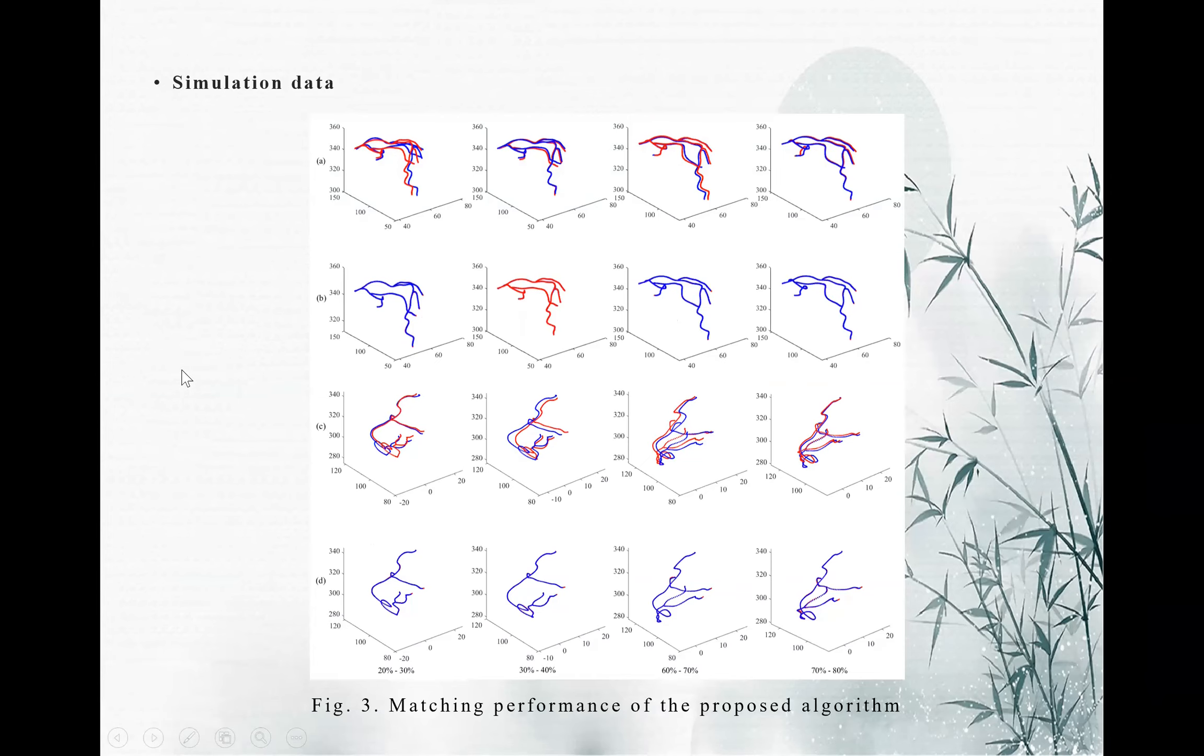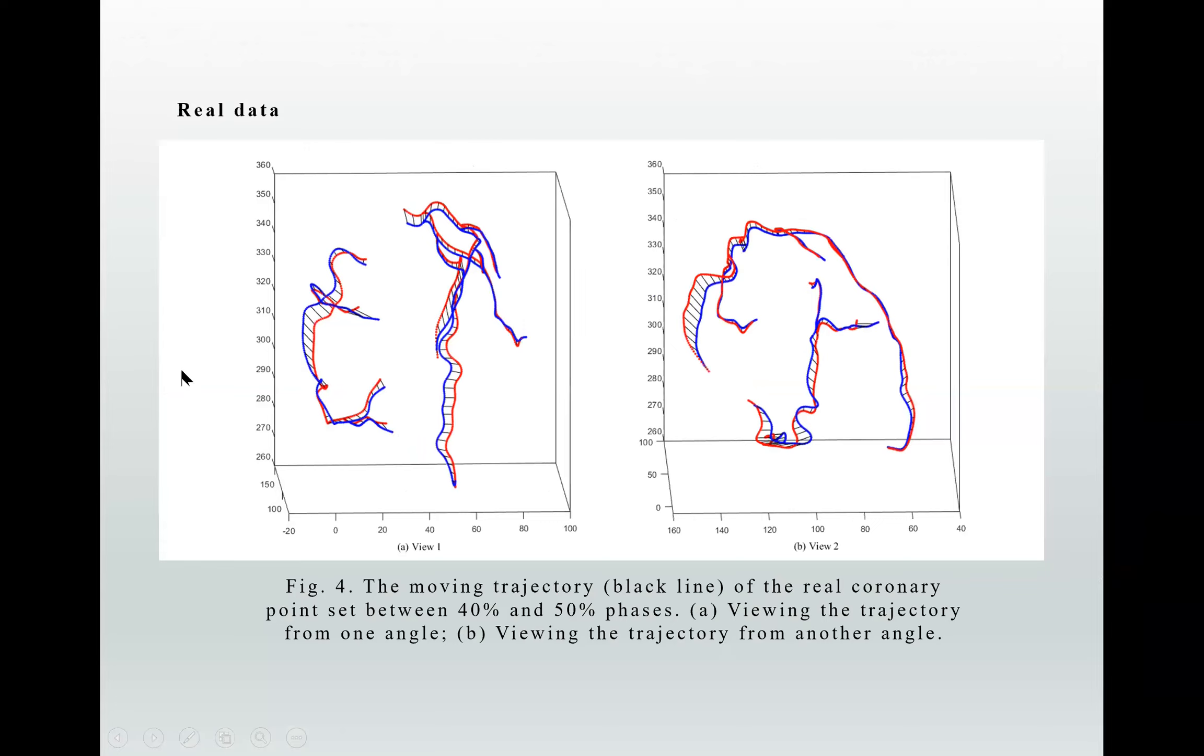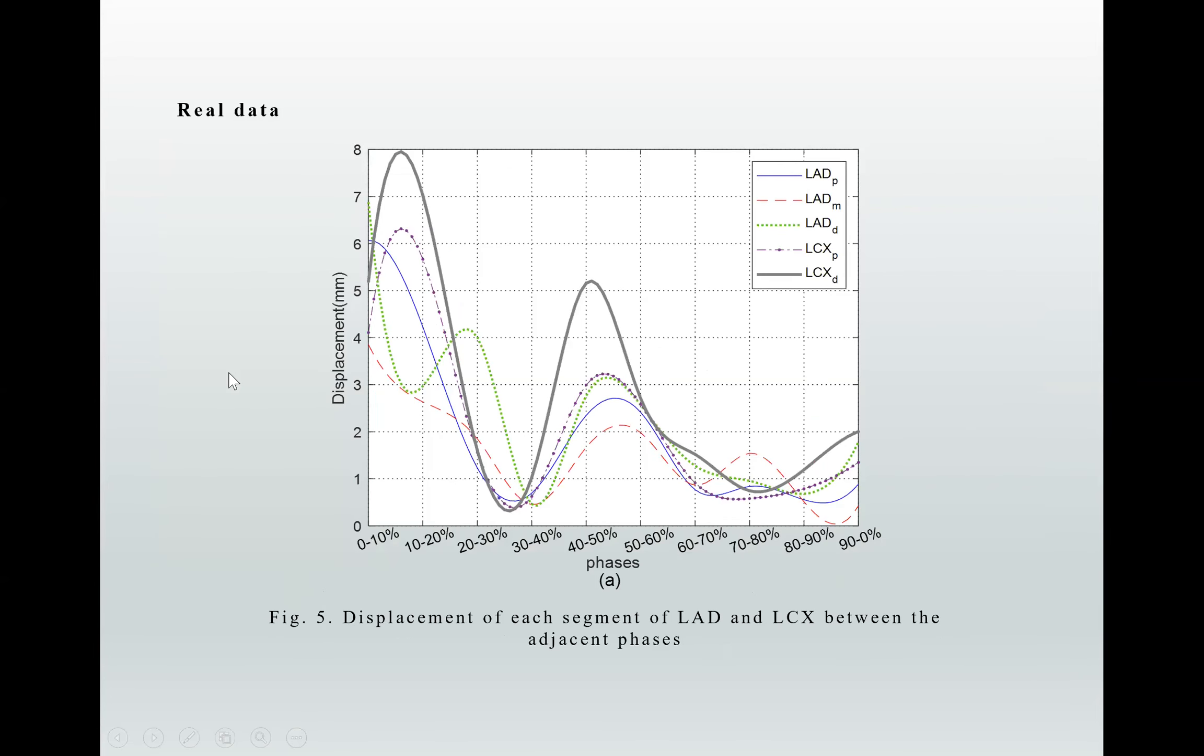We also did some experiments on the real data. We calculated the moving trajectory of the real data between the adjacent phases, and the black line represents the moving trajectory. According to the coronary segment principles, the coronary arteries are divided into several segments.